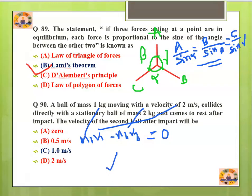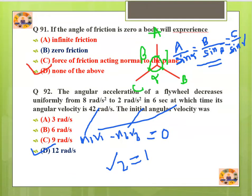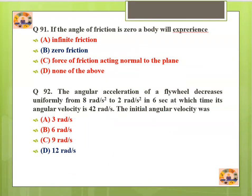Question number 91: If the angle of friction is zero, a body will experience zero friction. An angle of friction equal to zero means the surface is smooth, so there will be no friction.